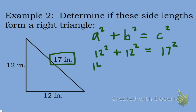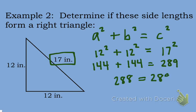We know that 12² is equal to 144, and 17² turns out to be 289. And when I add my 144 plus 144, I get 288. And since 288 is not equal to 289, I know that this triangle is not a right triangle.